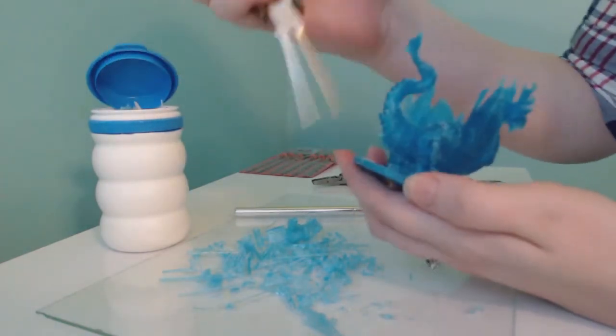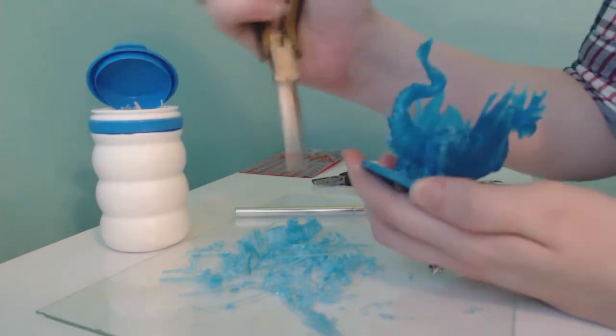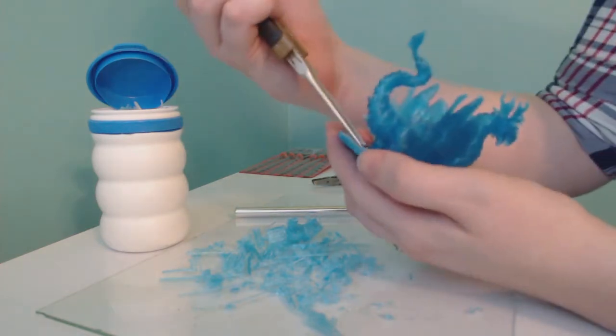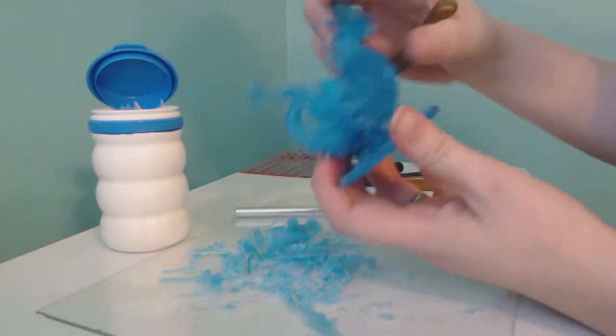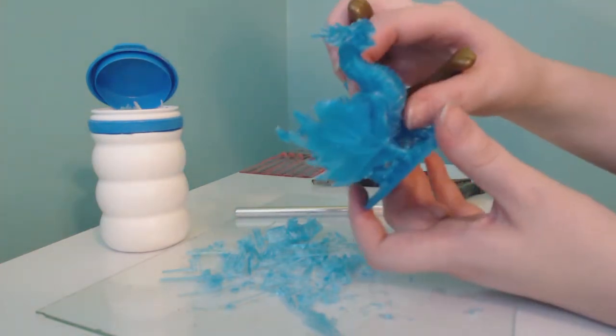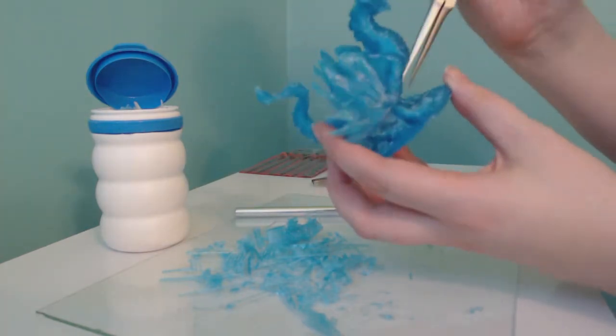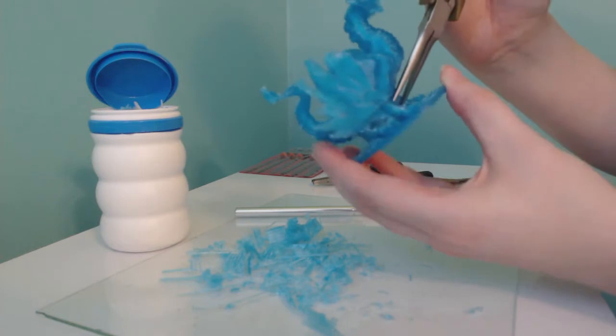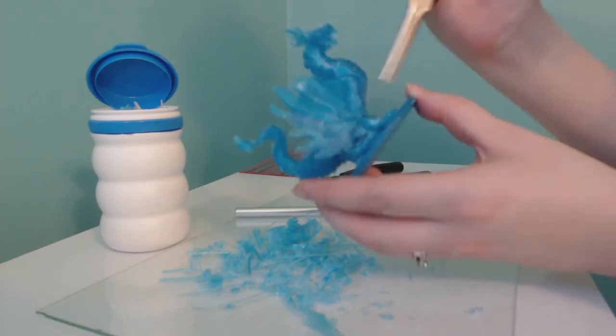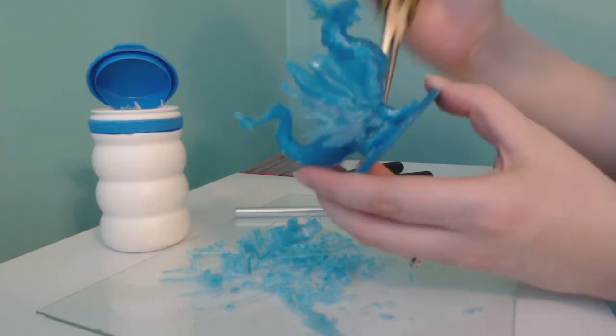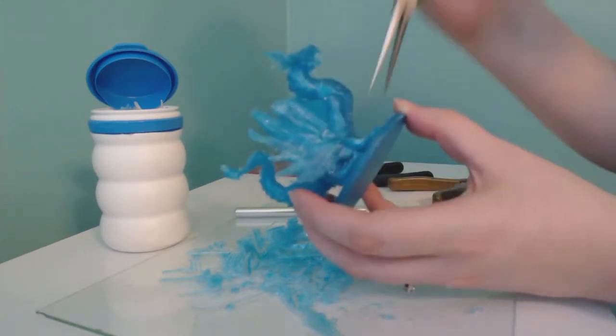But at this point, I like to go back and forth between the pliers and the exacto knife until the final model is nice and clean. And then I don't think I'll have to sand this one. I might, but I shouldn't have to. This is a pretty nice model. I like this one a lot.